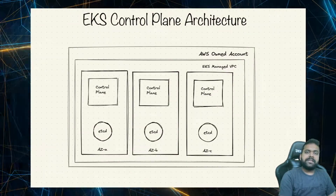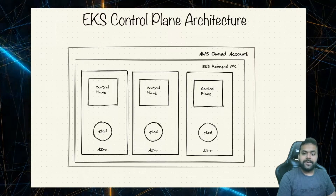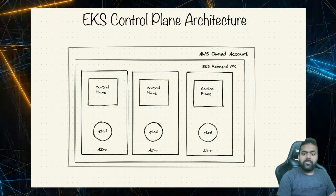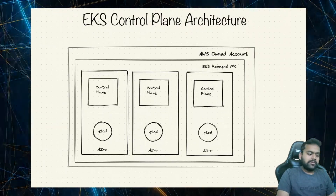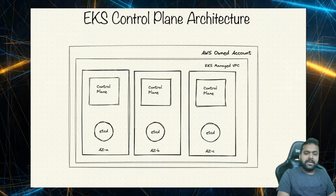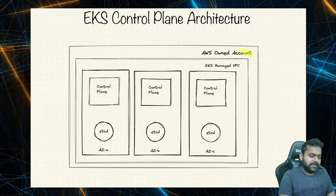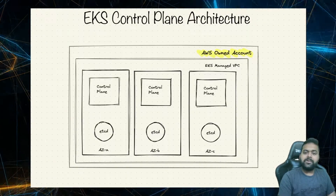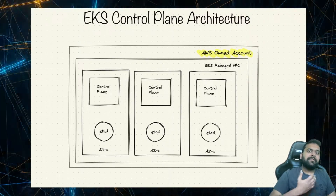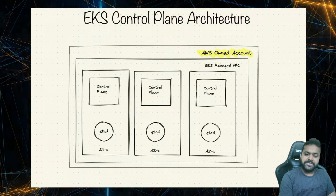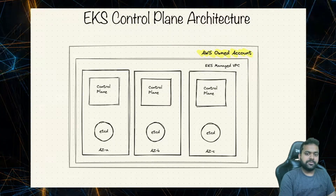When we say EKS is a managed Kubernetes, that means the control plane is managed. What does managed mean? As you can see in this diagram, it says it is an AWS-owned account. That means this control plane — you won't be having access to these machines, because they are living inside the AWS-owned account.